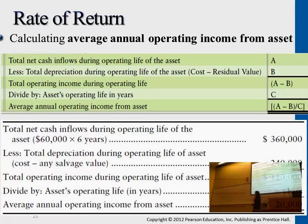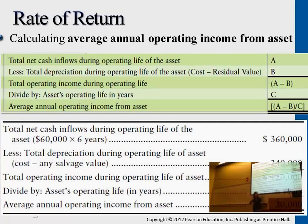So the first step when you look at each and every problem: ask yourself, what is the net cash inflow? For this problem, it's $60,000 per year. You use it for six years — that's the lifetime of the asset. Every single year you have $60,000, so altogether the total cash inflow is $360,000.